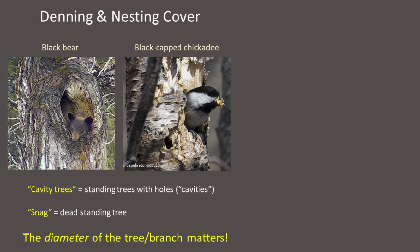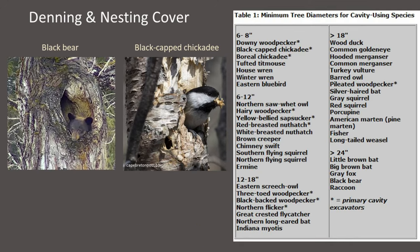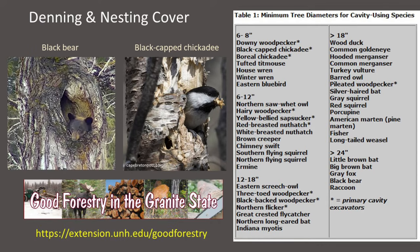Trees or branches just large enough for a chickadee obviously aren't going to be large enough for a porcupine or a black bear. Each cavity-using wildlife species requires trees larger than a certain minimum diameter to meet its nesting or denning needs. This chart from the publication Good Forestry in the Granite State lists the minimum tree diameters required by a sample of cavity-using wildlife species in New England. The free PDF and online version is available at extension.unh.edu/good-forestry.